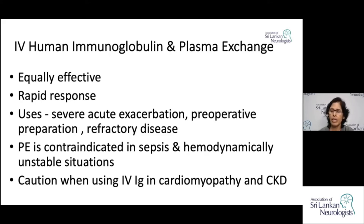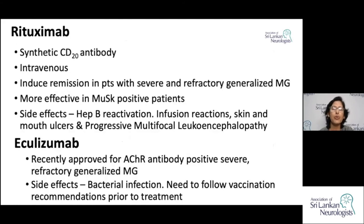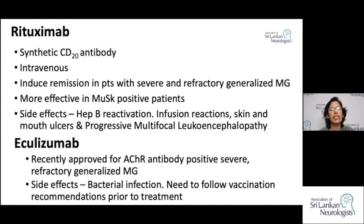For patients with refractory disease, two monoclonal antibodies are now recommended: rituximab and eculizumab. Both can be given to induce remission in severe and refractory generalized Myasthenia Gravis. They share similar side effects such as hepatitis B reactivation, infections, and progressive multifocal leukoencephalopathy. Rituximab is generally more effective in MuSK-positive patients, whereas eculizumab is recommended for acetylcholine receptor antibody-positive patients.